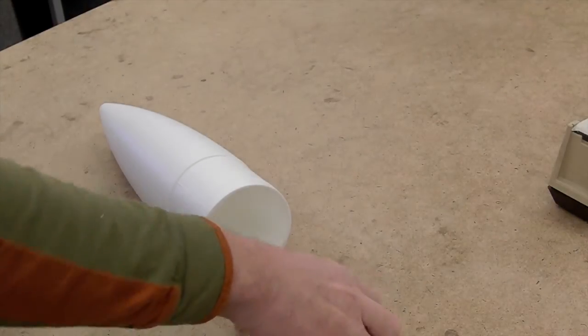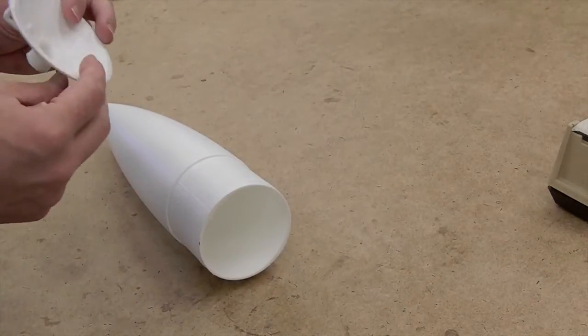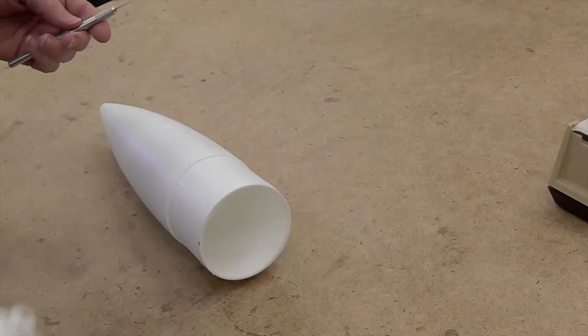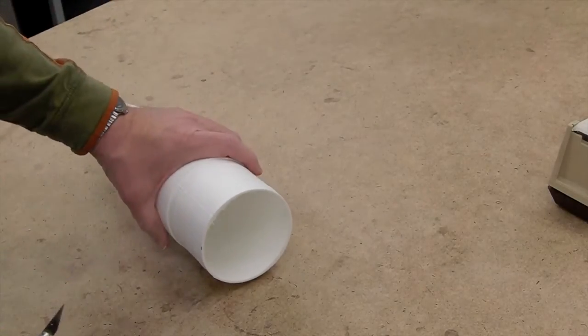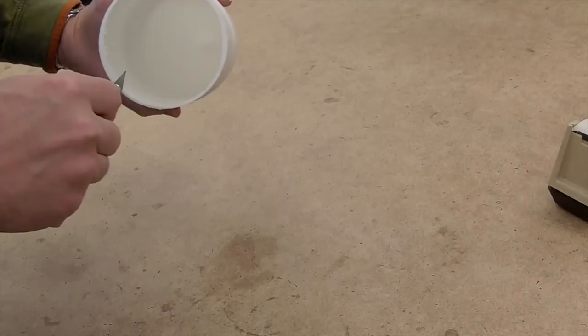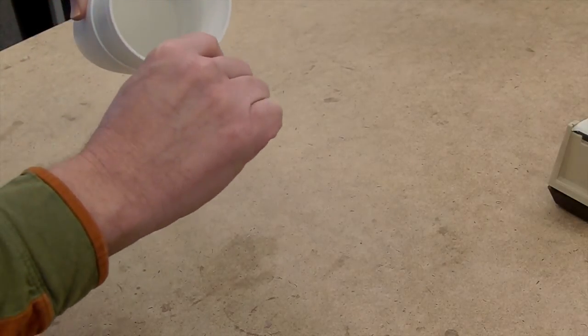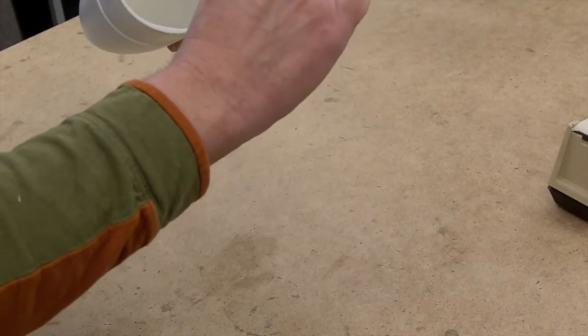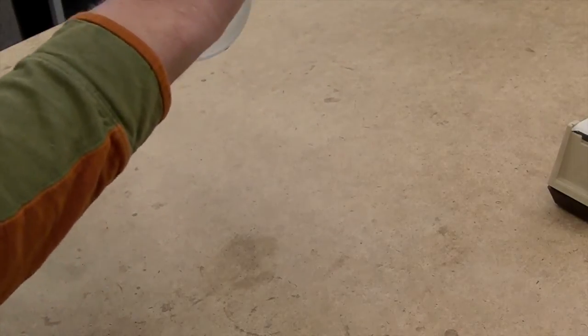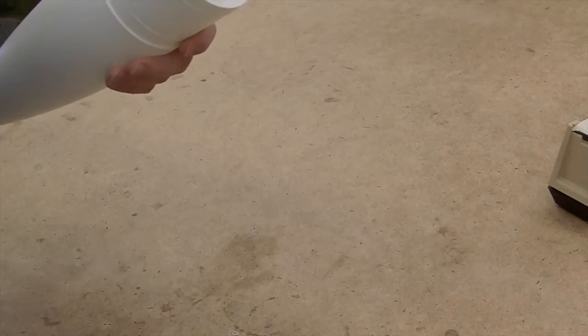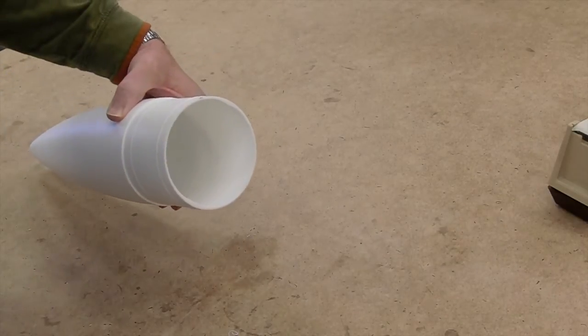Once we've cut off the base, we can discard it. There's really no good use for this. And we want to clean up our edge a little. Again, with plastic, this is quite easy. Just run a knife around the inside to create a chamfer and clean up the little bits left from the saw.